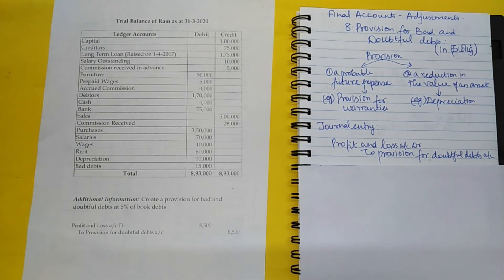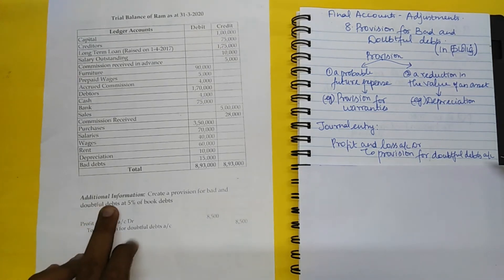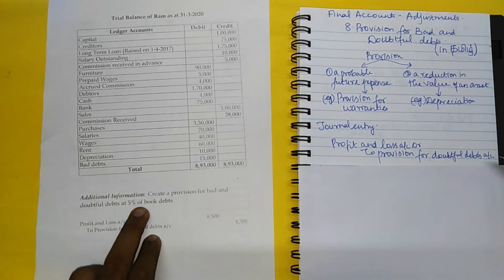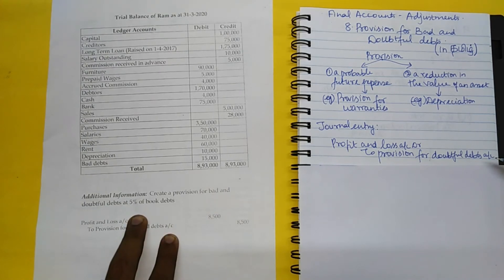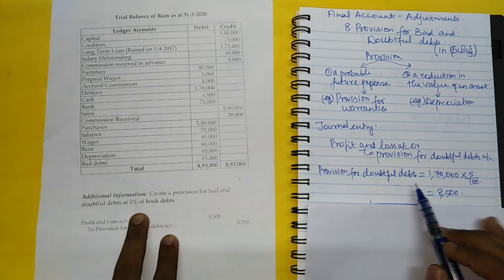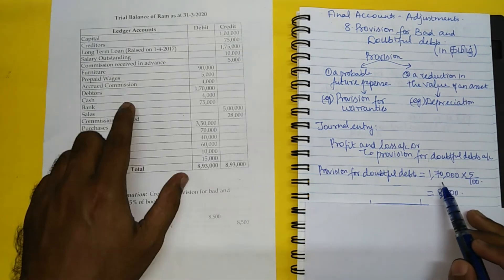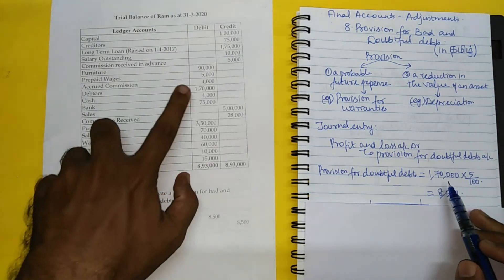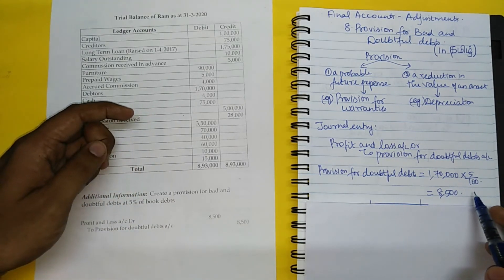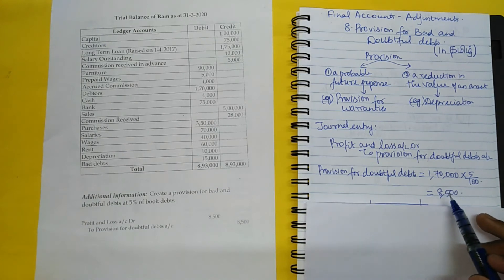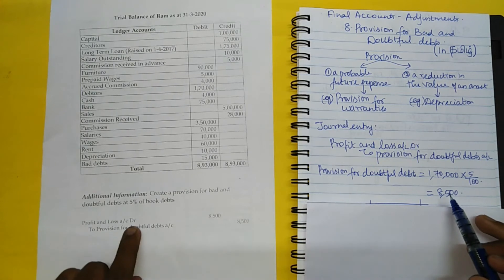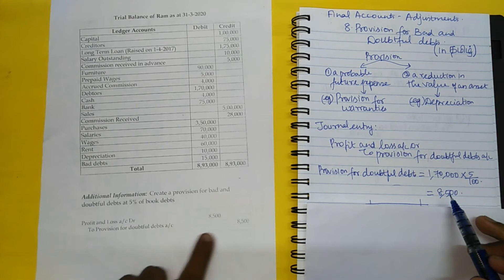In the balance sheet, we will show the provision against the assets side. Now let's work through an illustration. From the trial balance, the additional information says: Create a provision for bad and doubtful debts at 5% of book debts. The debtors balance is such that 5% calculates to ₹8,500. So the journal entry is: Profit and Loss Account Dr. ₹8,500, To Provision for Doubtful Debts Account ₹8,500.